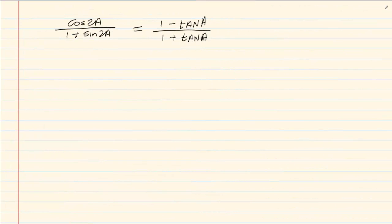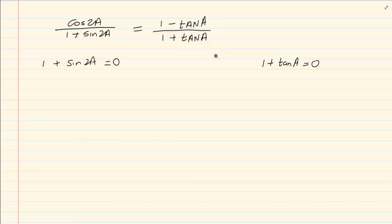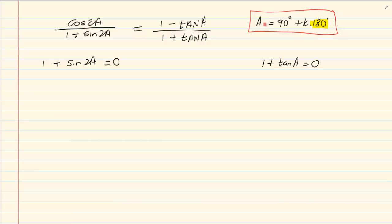If they tell you to discuss the restrictions — for which values of a would this identity be undefined — it will be undefined when the denominator equals zero. Since there is a tan in this equation, we also know another position where a is undefined: a = 90°, because that is the asymptote of the tan graph. It repeats every 180° because the period of the tan graph is 180°. So you would also state that a = 90° + k·180°.